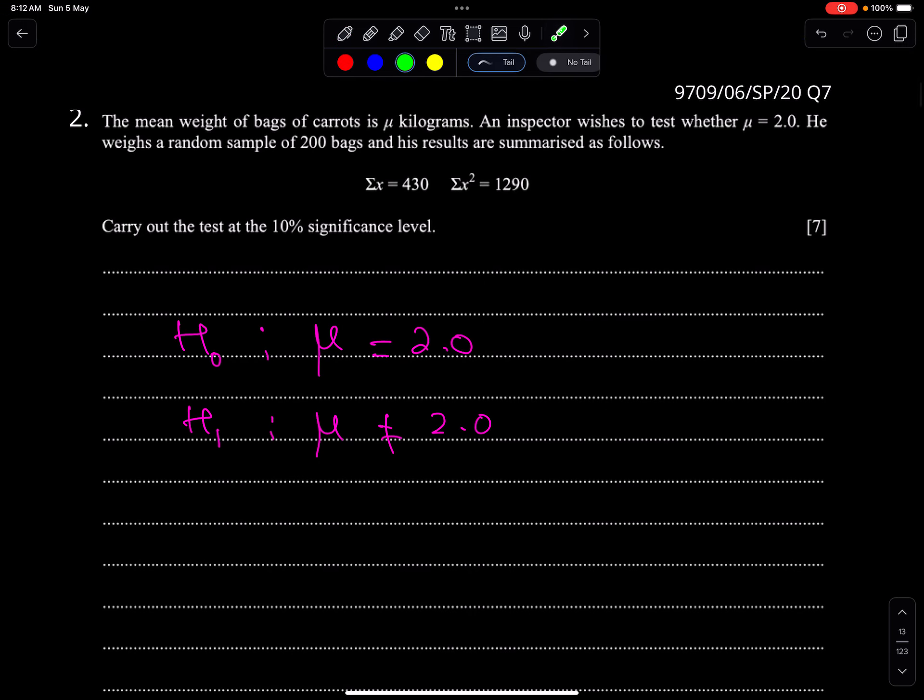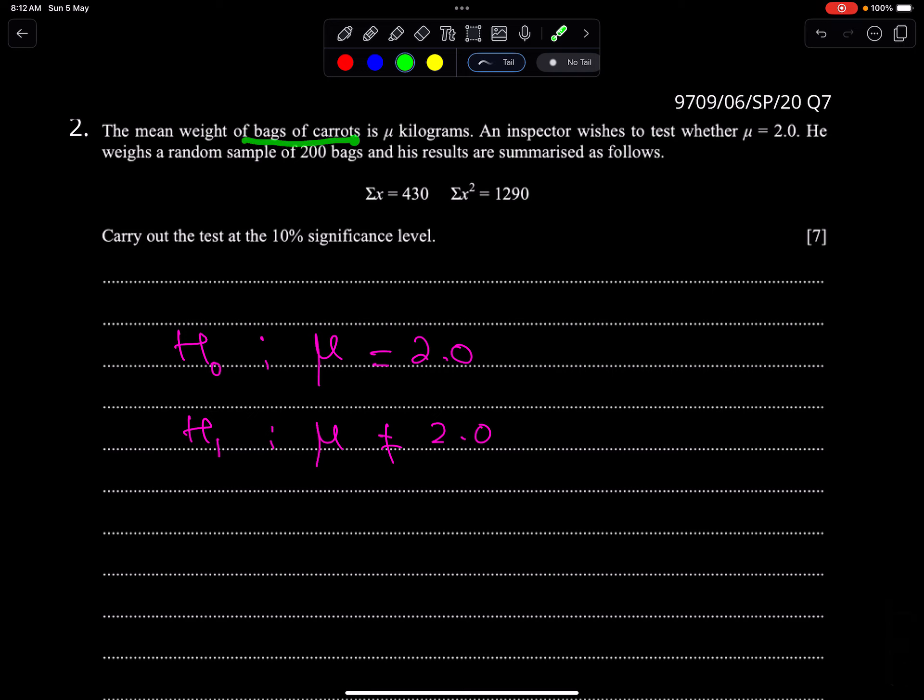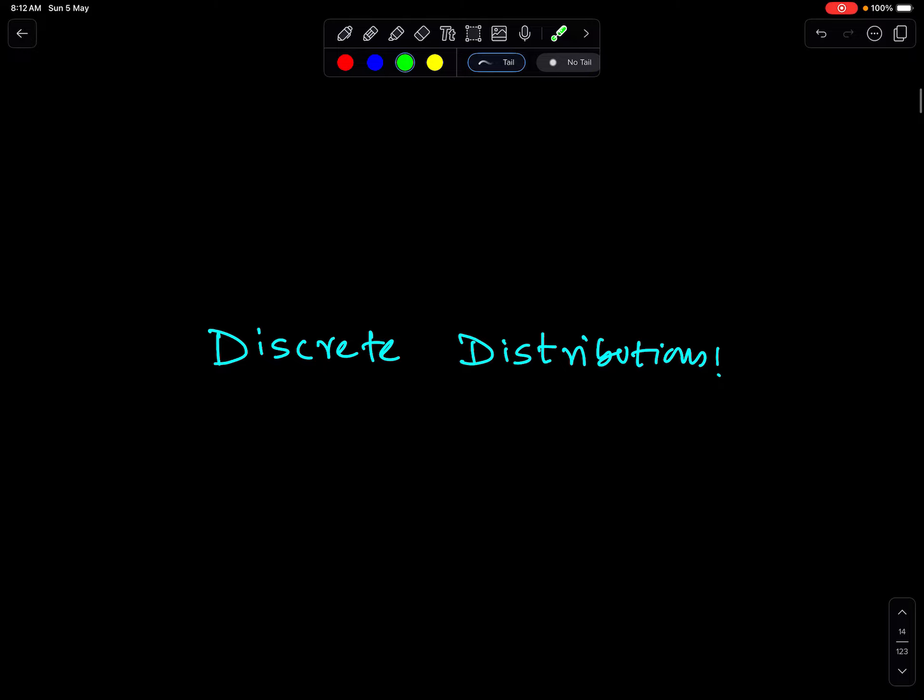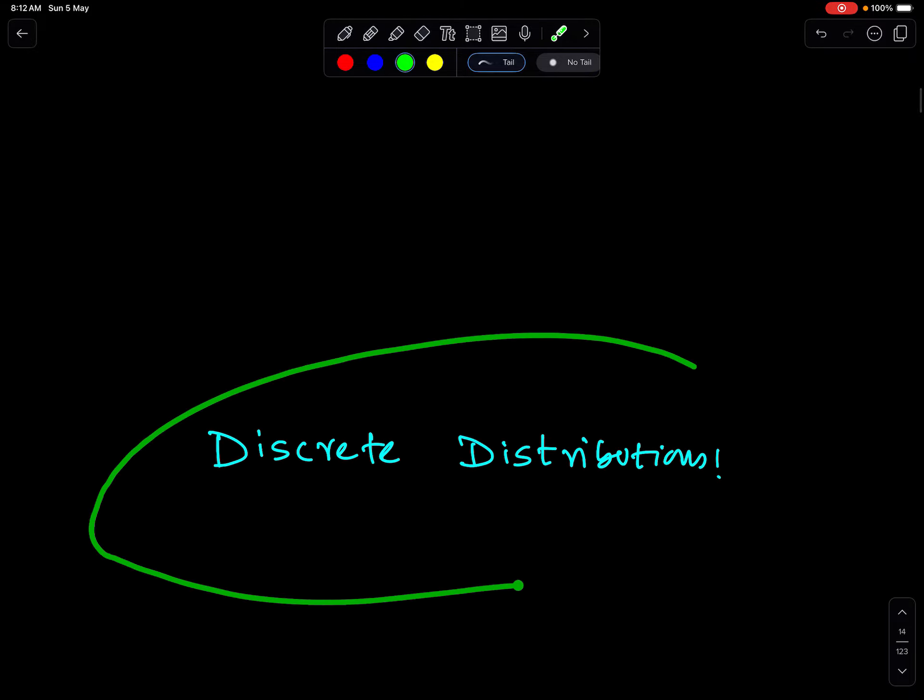Last example. The mean weight of bag of carrots is mu kilograms. An inspector wishes to test whether mu is 2.0. You just want to test whether mu is 2.0 or not. This means checking whether mu is 2.0 or not. This is the test in this case. I will discuss these types of questions in my next lecture, inshallah. Good luck and Allah hafiz.